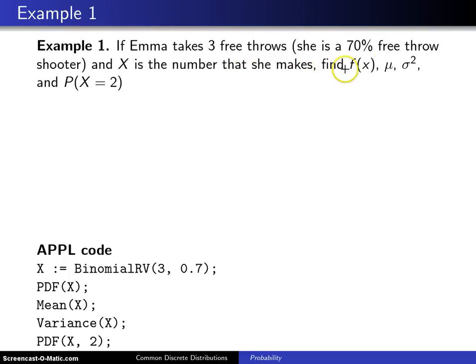find the probability mass function f of x, the population mean mu, the population variance sigma squared, and the probability that Emma will make exactly two of those three free throws.